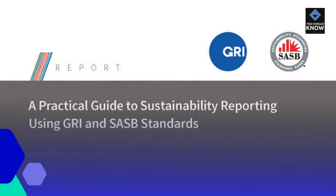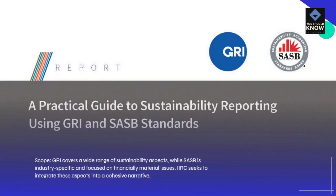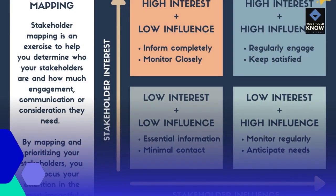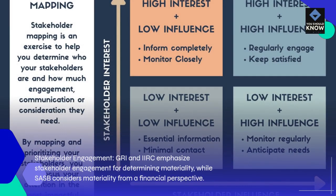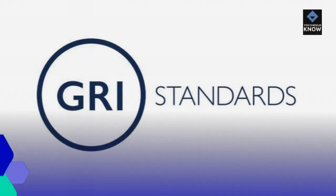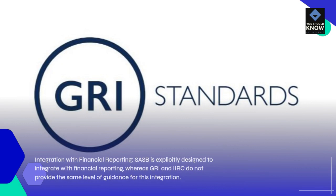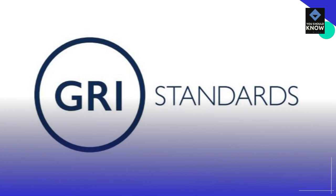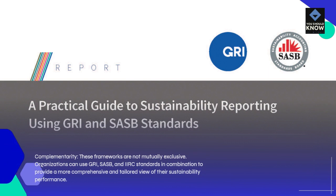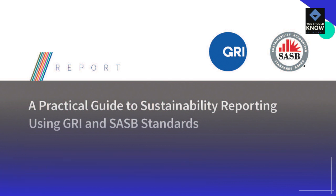Key Differences and Complementarity. Scope: GRI covers a wide range of sustainability aspects, while SASB is industry-specific and focused on financially material issues. IIRC seeks to integrate these aspects into a cohesive narrative. Stakeholder Engagement: GRI and IIRC emphasize stakeholder engagement for determining materiality, while SASB considers materiality from a financial perspective. Integration with Financial Reporting: SASB is explicitly designed to integrate with financial reporting, whereas GRI and IIRC do not provide the same level of guidance for this integration. Complementarity: These frameworks are not mutually exclusive — organizations can use GRI, SASB, and IIRC standards in combination to provide a more comprehensive and tailored view of their sustainability performance.